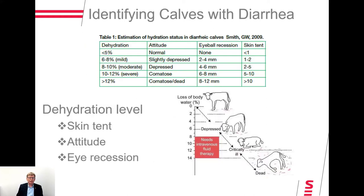With calves that have diarrhea, we need to look at three things: the amount of dehydration, the attitude, the eyeball recession, and the skin tent. Attitude can go from normal to comatose. Eyeball recession — how deep are the eyes in the head — can be normal or can be more than one centimeter, 8 to 12 millimeters, in their socket.